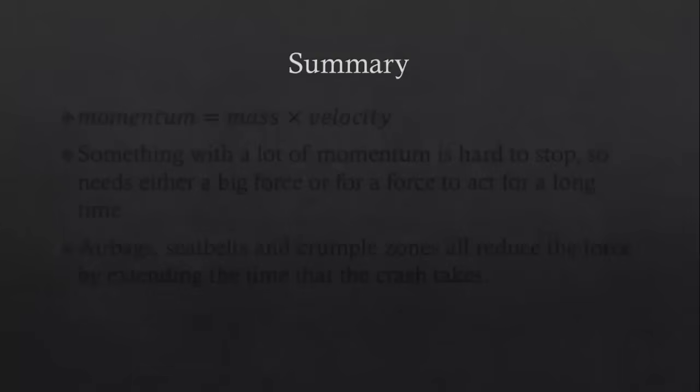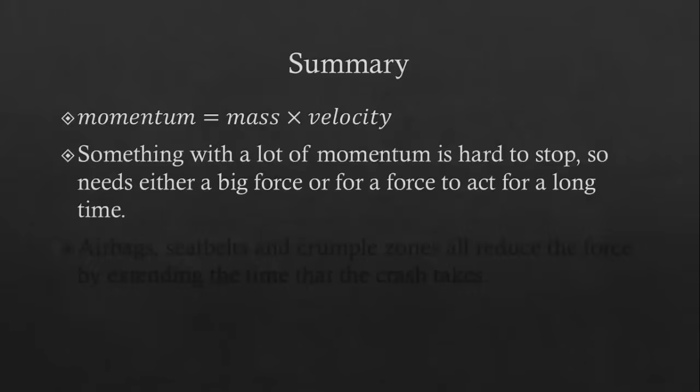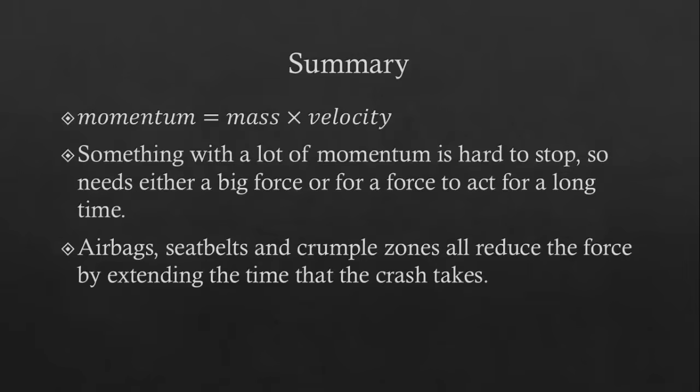So to summarize, momentum is mass times velocity. Something with a lot of momentum is hard to stop, so it requires either a big force, or for a force to act for a long time. Safety features in cars, such as airbags, seat belts, and crumple zones, are all designed to reduce the force experienced by the driver and passengers. This is done by extending the time that the crash takes.